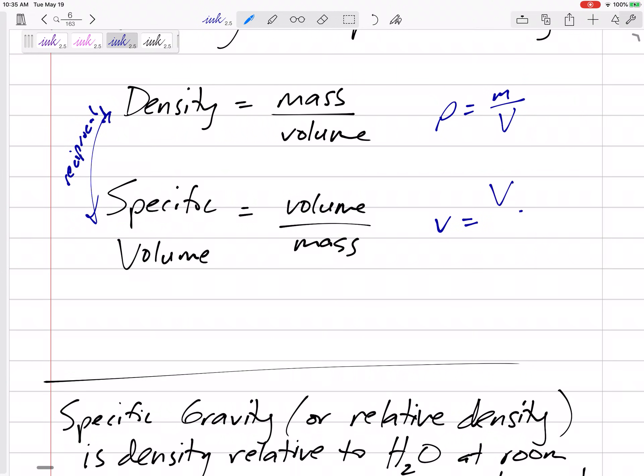So specific volume is volume divided by mass. In some equations, if you need specific volume and you know density, then it's one over the other, or v is one over ρ. They're reciprocals of each other. So whatever you need, if you need density and you're given specific volume, just take the reciprocal.